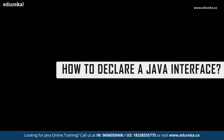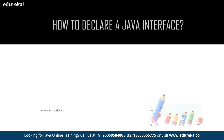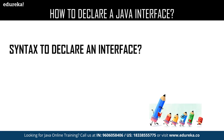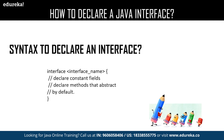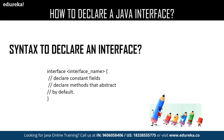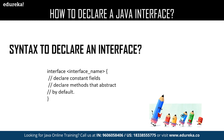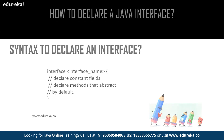Now let us have a quick revision about how to declare an interface. This is the syntax for declaring an interface where you use the interface keyword followed by the name of your interface, and inside the interface you can declare your methods. By default, all the methods which you declare in an interface are considered to be public.